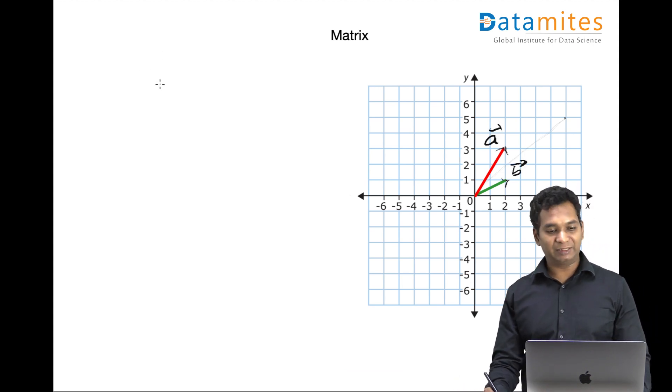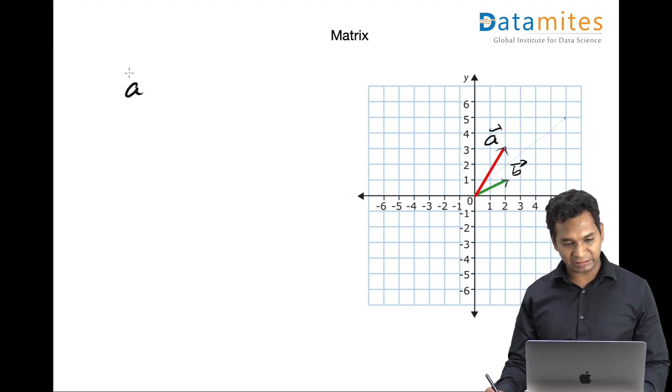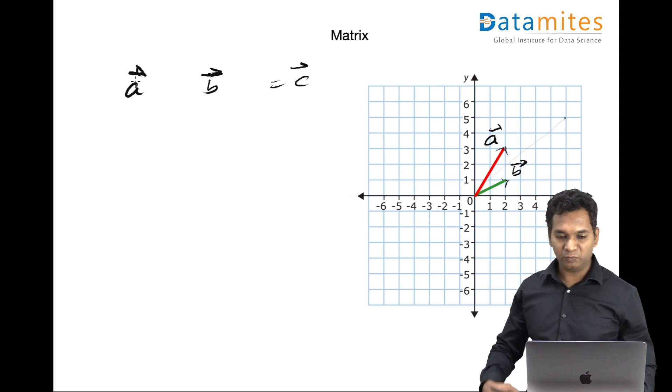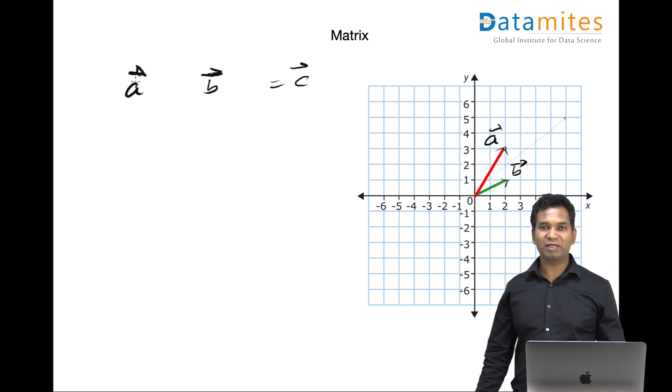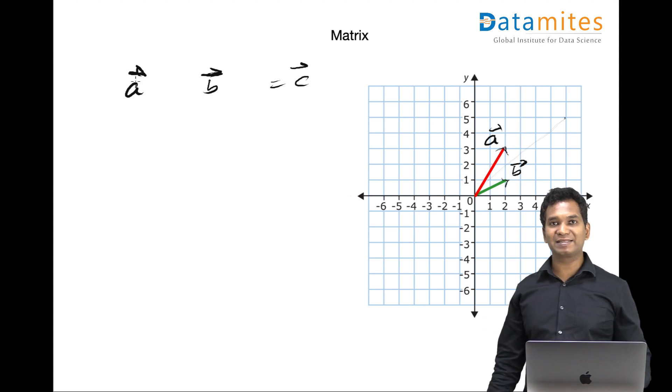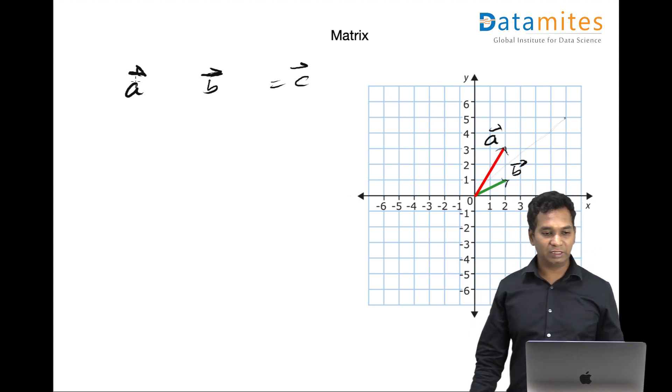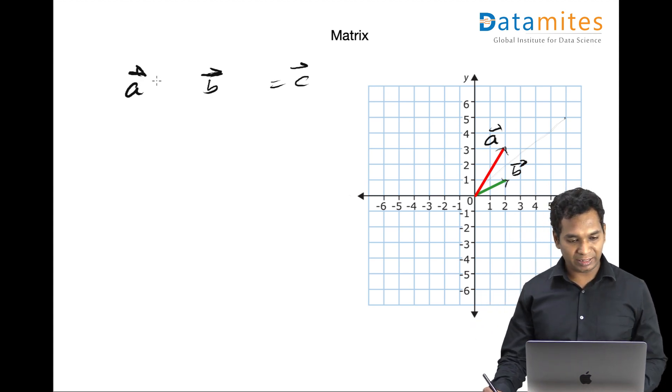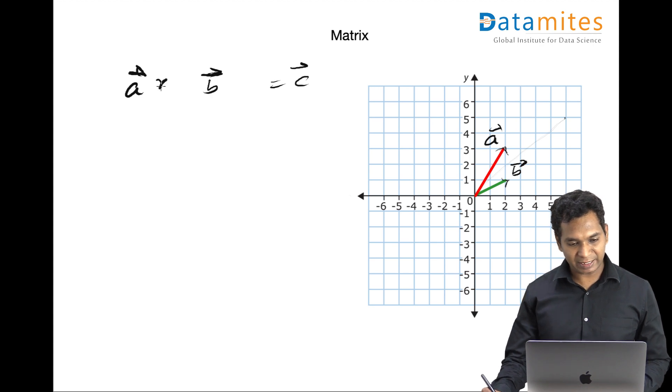So imagine there is another vector which is a resultant of a linear combination of these vectors. Not simply adding this but a scaled addition, for example some value like x plus y, so two different values.